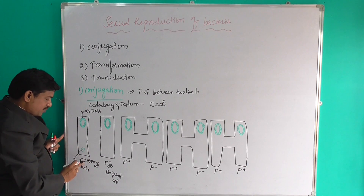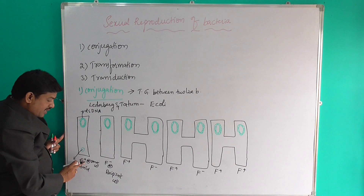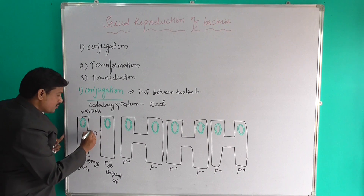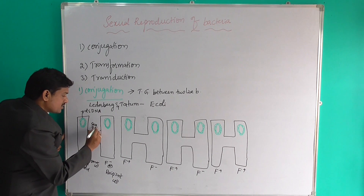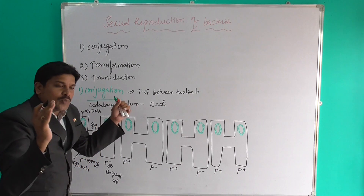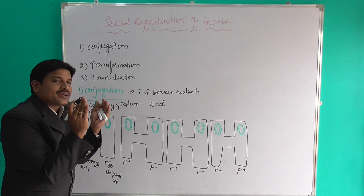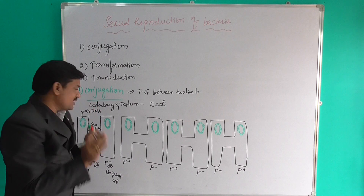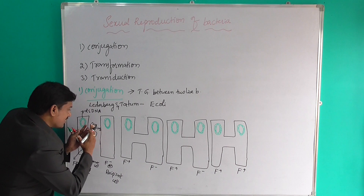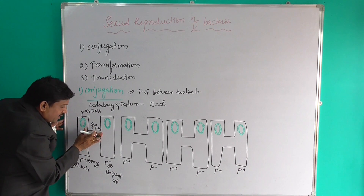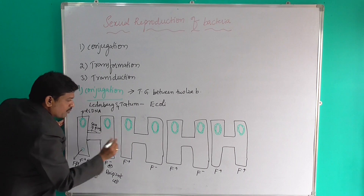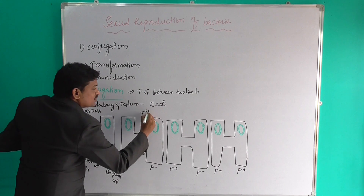Next, the F plus cell produces sex pili. This is a very important point. With the help of sex pili, both bacteria make contact with each other. Through this contact, a conjugation tube is formed between the two bacteria in the middle.